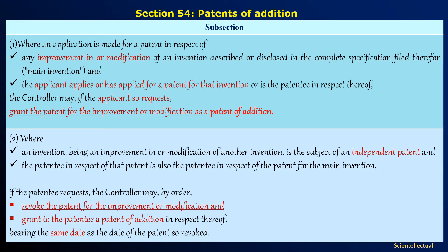Subsection 2: where an invention being an improvement or modification of another one is the subject of an independent patent, and the patentee in respect of that patent is also the patentee in respect of the patent of the main invention, then if the patentee requests, the controller may revoke the patent for the improvement or modification and grant to the patentee a patent of addition bearing the same date as the date of the patent so revoked.